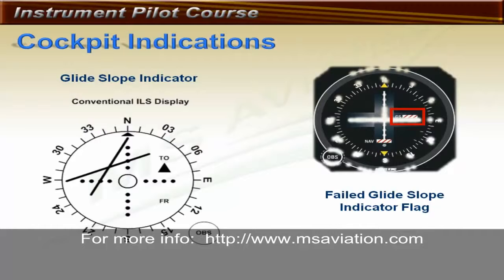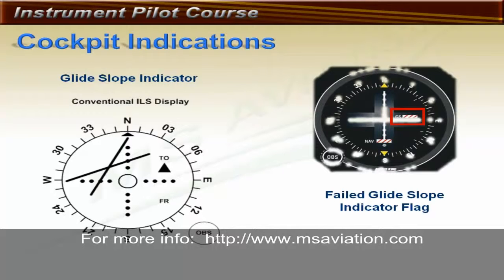In the cockpit, the ILS indications are basically a VOR display with the glide slope added as a horizontal needle that moves up and down. Notice there are also two flags — one for the localizer and one for the glide slope. When performing an ILS, it is critical to check for flags on both the localizer and glide slope. Some indicators have glide slope needles that stay centered when the glide slope fails, so if the glide slope flag goes unnoticed, the pilot may think they are still flying the glide slope. The only indication of glide slope failure is the glide slope flag.